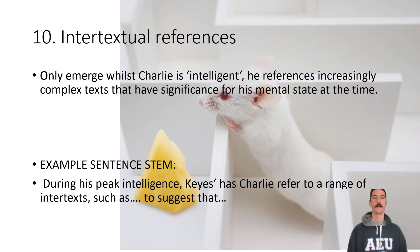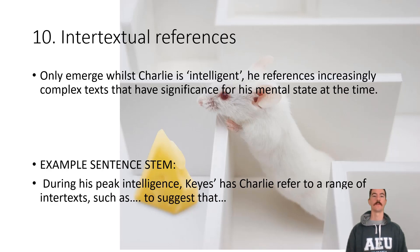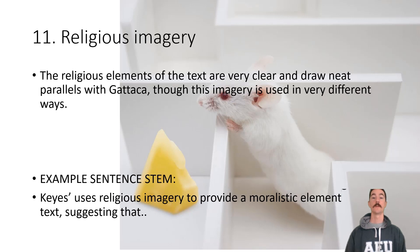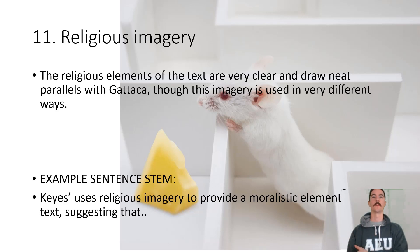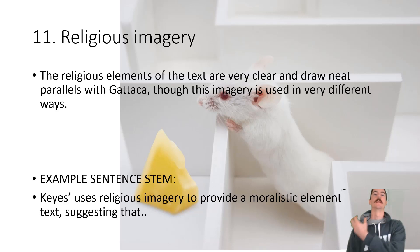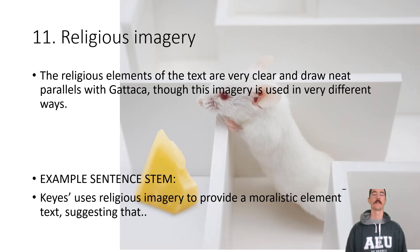Number ten is intertextual references — a really expansive one you can prepare for well. These references only emerge while Charlie is intelligent; he references increasingly complex texts that have significance for his mental state at that time. During his peak intelligence, Keyes has Charlie refer to a range of intertexts to suggest religious imagery. The religious elements draw neat parallels with Gattaca — for example, rosary beads in Gattaca, or the Garden of Eden being alluded to in Flowers for Algernon. Keyes uses religious imagery to provide a moralistic element, suggesting that...